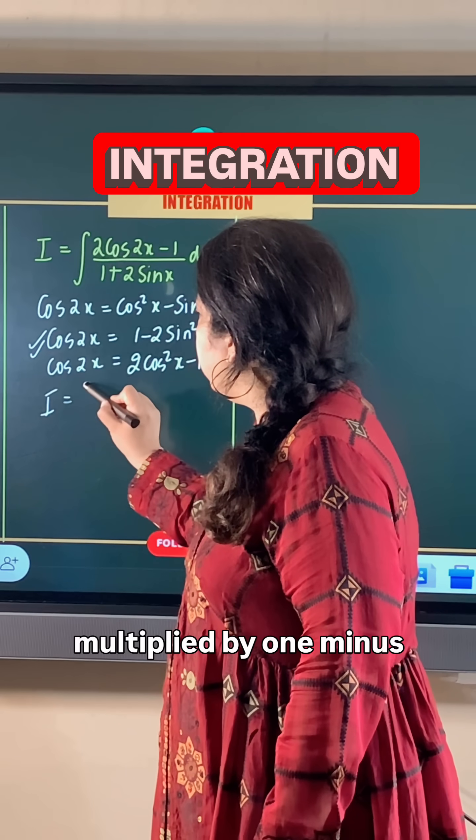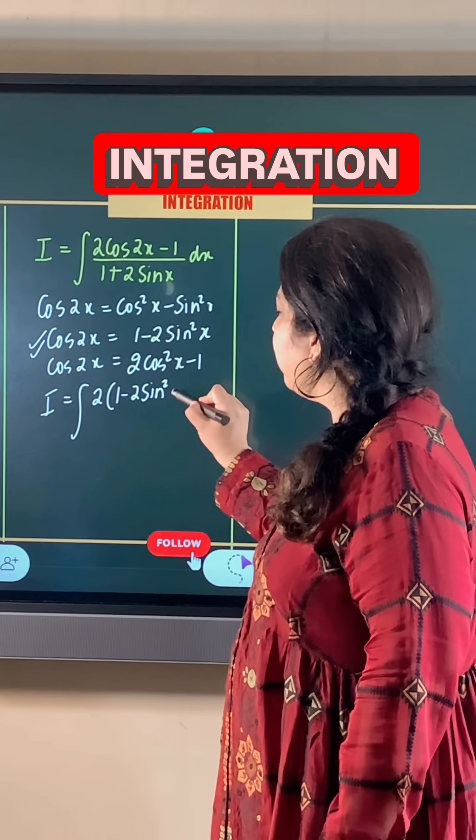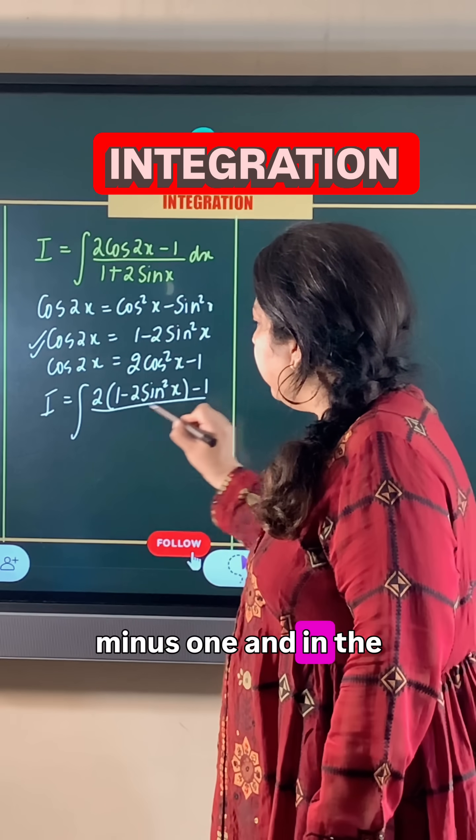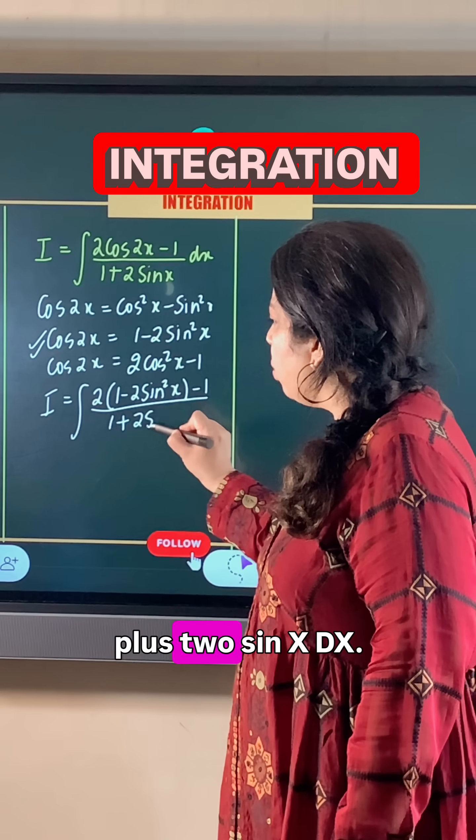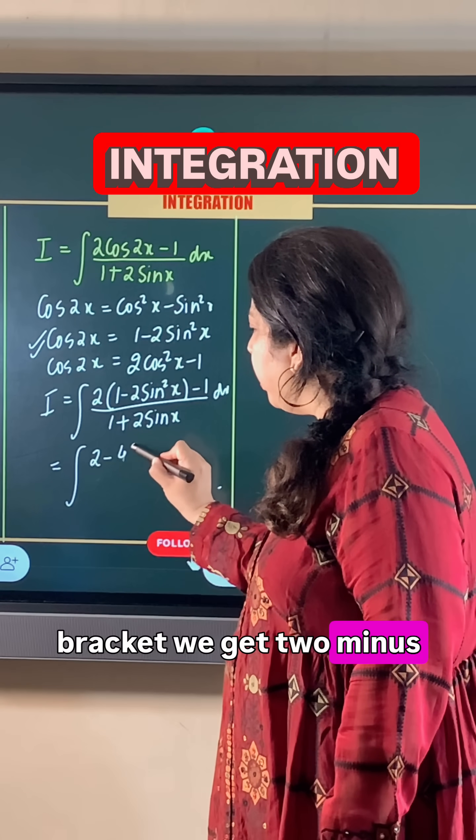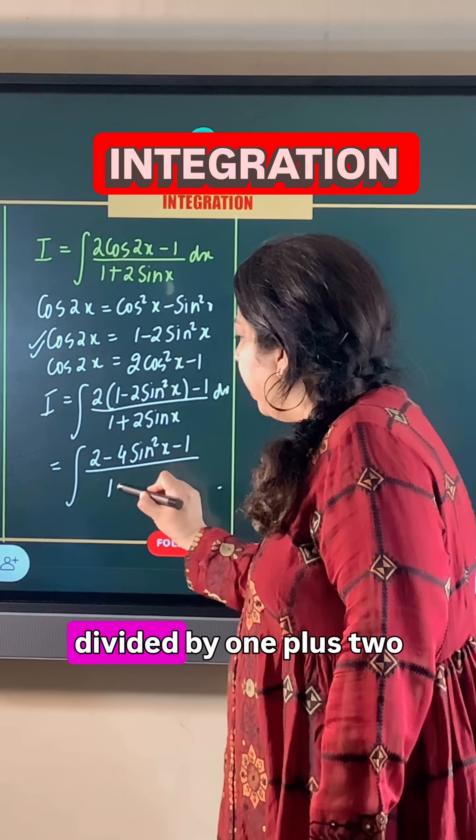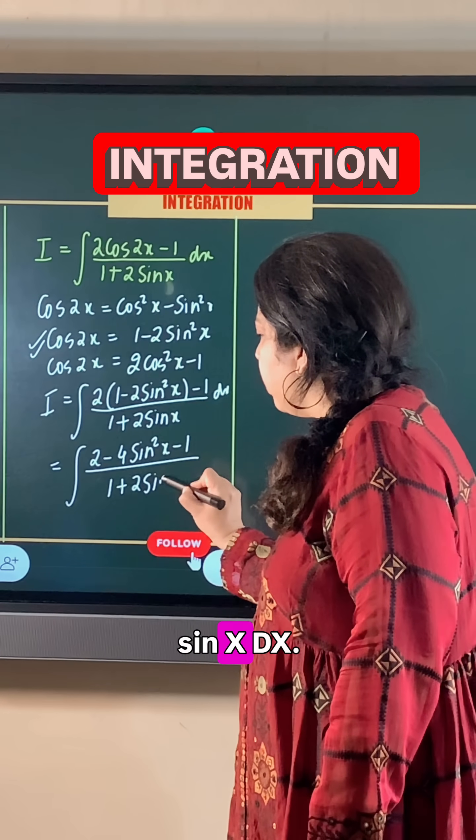The integral becomes 2(1 - 2sin²x) - 1 over 1 + 2sinx dx. When we open the bracket, we get 2 - 4sin²x - 1 divided by 1 + 2sinx dx. Since 2 - 1 is 1, this becomes 1 - 4sin²x over 1 + 2sinx.